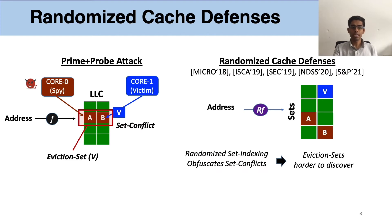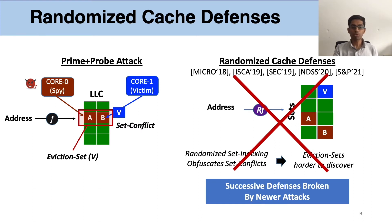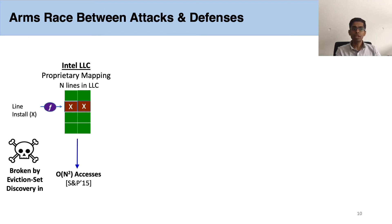This process is made harder with randomized cache defenses. These defenses use randomized mapping of addresses to cache sets to obfuscate the locations of set conflicts and make eviction set discovery harder. However, recent defenses have been broken by newer attacks. It all started in 2015 at Oakland, where eviction sets were shown to be discoverable in order of n-squared accesses for a cache with n lines. For a typical LLC, this means eviction sets can be discovered in less than a second.